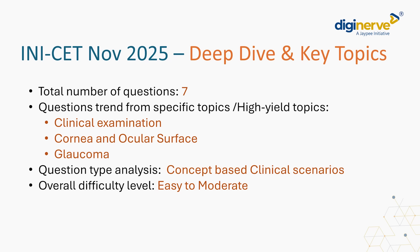This year there were a total of 7 questions. The trend was quite clinical — the questions pertain to clinical examination, cornea and ocular surface, and glaucoma. The questions were concept-based involving clinical scenarios, and therefore it is imperative that for future exams all students must delve into deeper in-depth knowledge of the pathology, look at multiple clinical images, read about the investigative modalities and the management solutions for every entity they are reading about. The overall difficulty level for this exam I would say was easy to moderate.